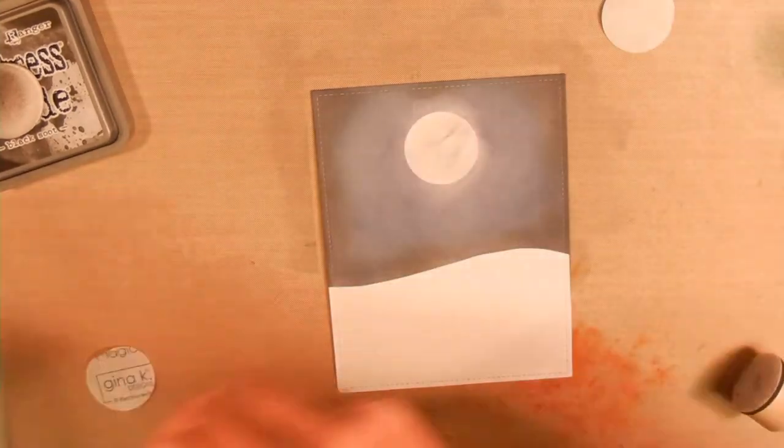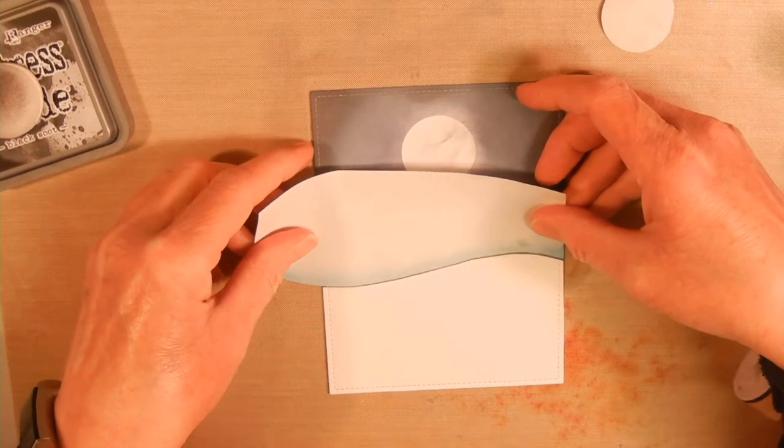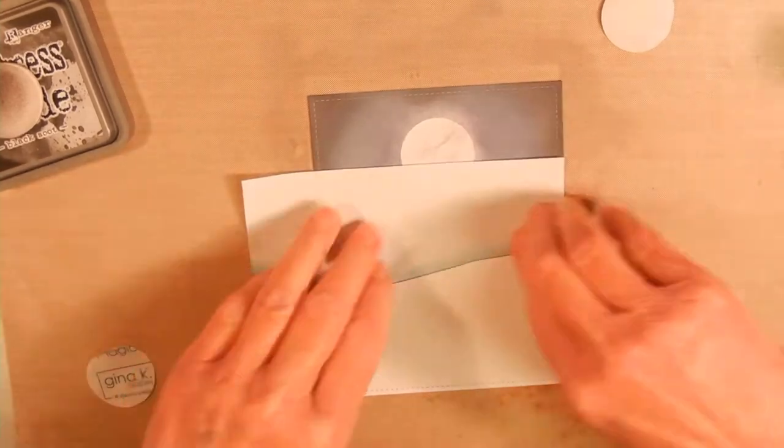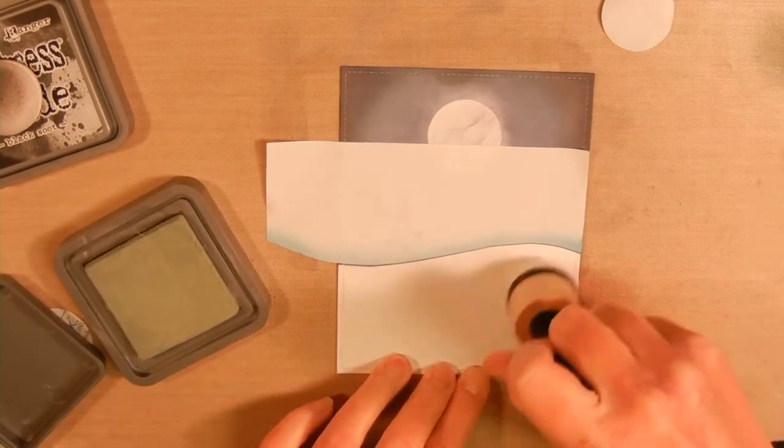Then I use a mask for my sky so I can do my ground. You want to make sure you don't line it exactly to the edge, otherwise you'll have a white line between the sky and the grass.